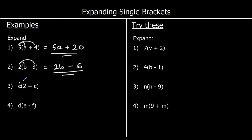The third one: c times 2. We don't write c2 — we always put the number first — so c times 2 is 2c. And c times c is going to be a plus, positive times a positive.